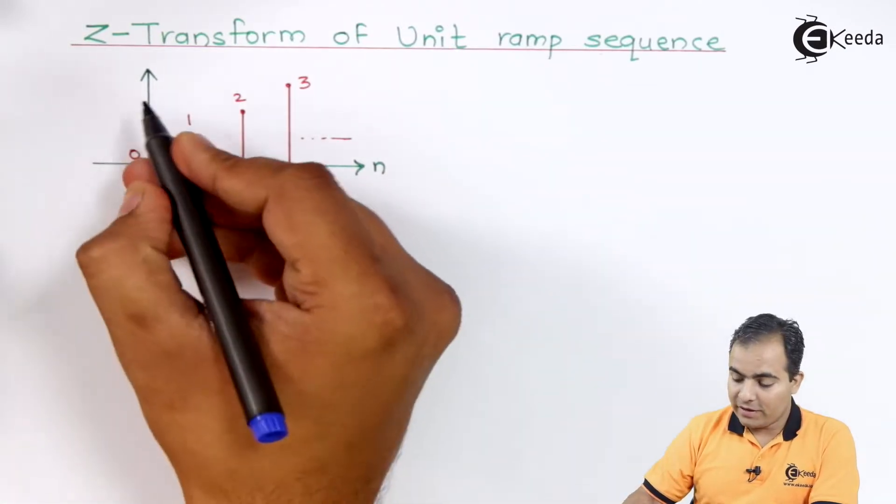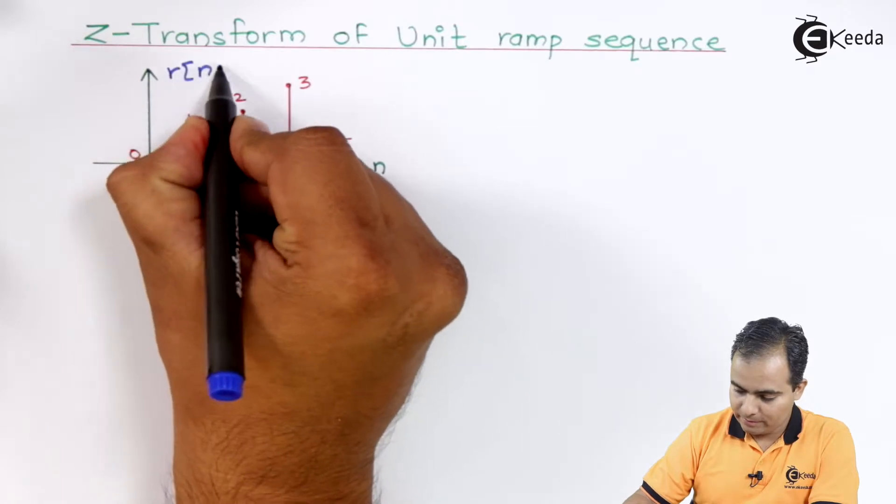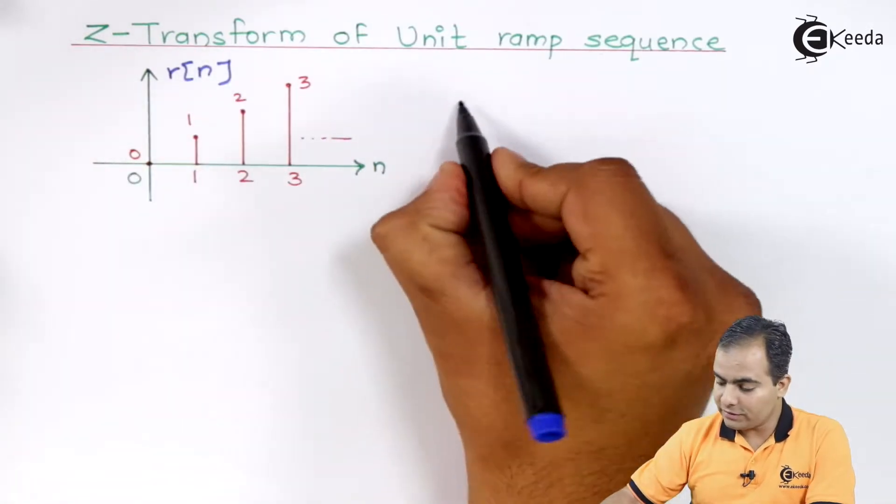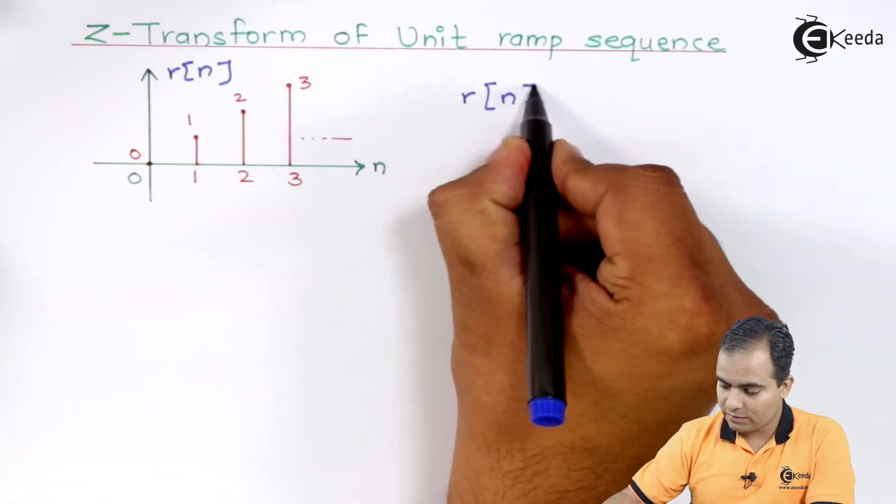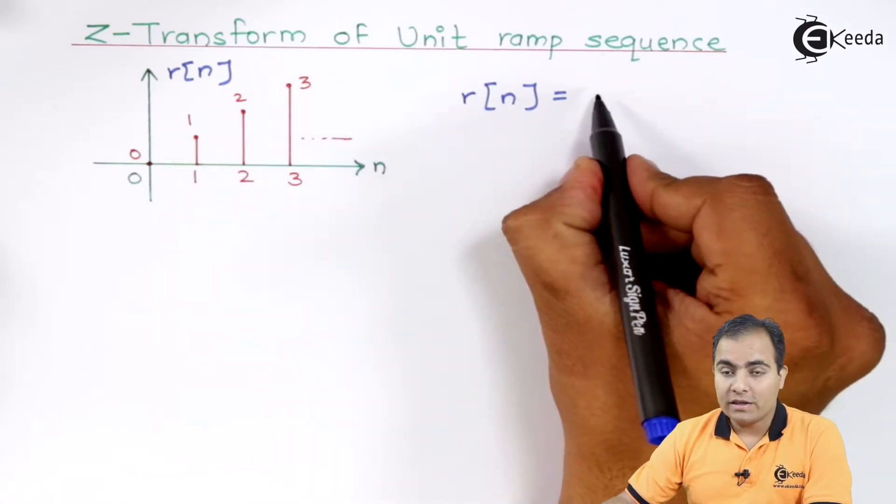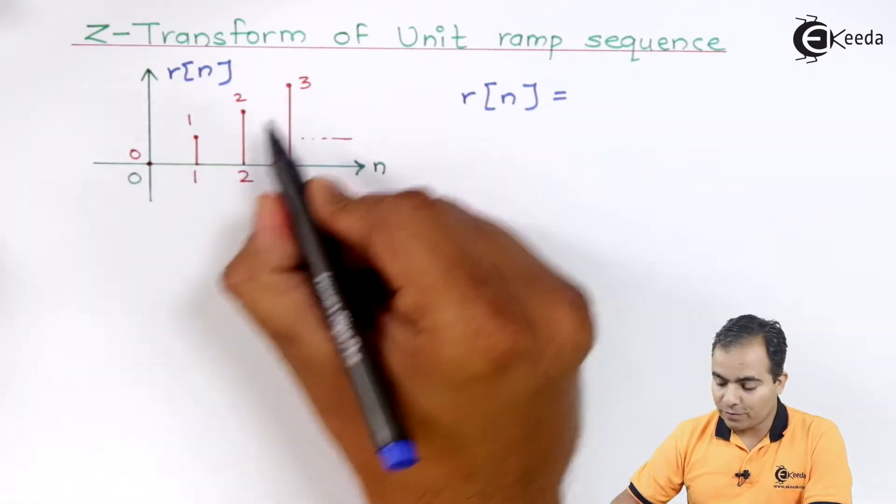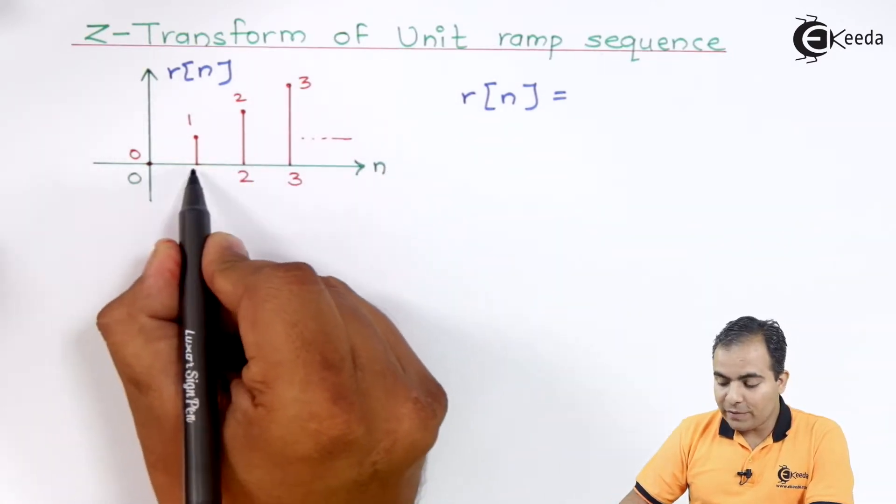Now, this is our ramp wave. This ramp wave can be represented by R of n and the equation is how to write the equation. Basically, the equation is the slope and now here the slope, how to calculate slope? Look at here, the next sample value is 1.